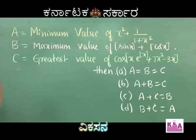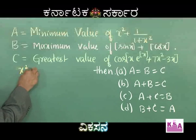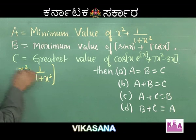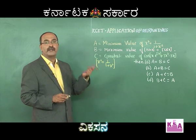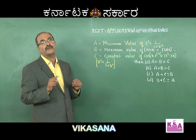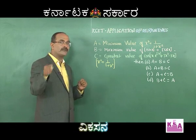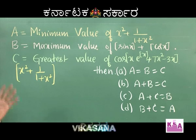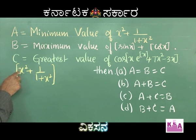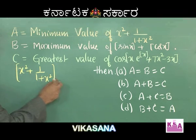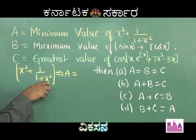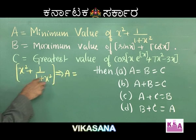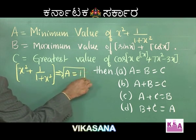A is the minimum value of x² + 1/(1 + x²). Just substitute x² = 0 — the least value of x² is 0. This gives A = 0 + 1/(1 + 0) = 1. We clearly got A = 1. Thirty-three percent of the problem is solved.